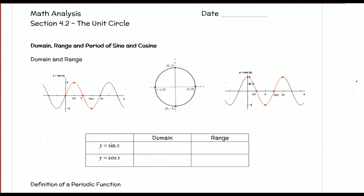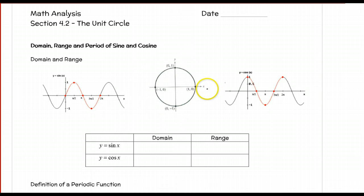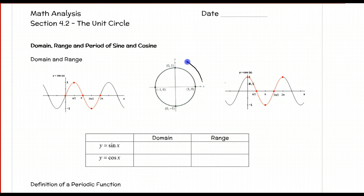Here I've got the graph of y equals sine of x, and I've got the graph of y equals cosine of x. And here's our unit circle, which we could use to generate both of these graphs. I'm going to show you a little demonstration about how to generate the sine curve based on the unit circle.